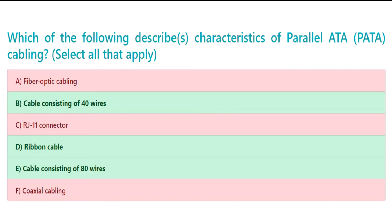The correct answers are B. Cable consisting of 40 wires, D. Ribbon cable, and E. Cable consisting of 80 wires.